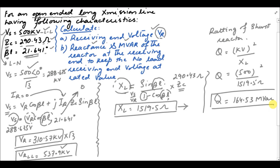In this way you can calculate the value of reactance that has to be added at the end of the line and the rating of that particular shunt reactor being used in order to reduce the voltage at the receiving end. Thank you.